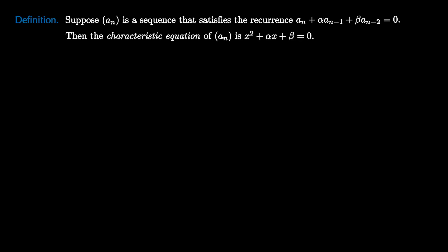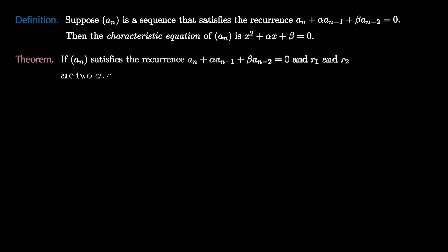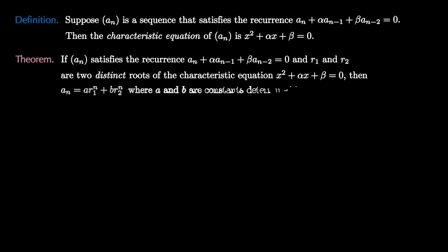The process we just discovered leads to the characteristic roots theorem. If a sequence a_n satisfies the recurrence a_n plus alpha·a_{n-1} plus beta·a_{n-2} equals 0, then the characteristic equation is x squared plus alpha·x plus beta equals 0. If r1 and r2 are two distinct roots of the characteristic equation, then a_n equals a·r1^n plus b·r2^n, where a and b are constants determined by the initial conditions.